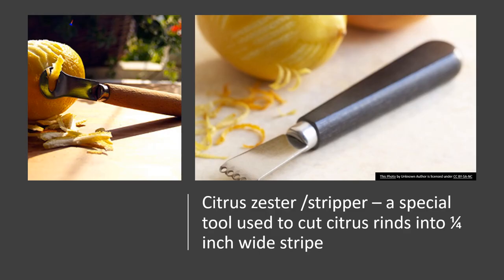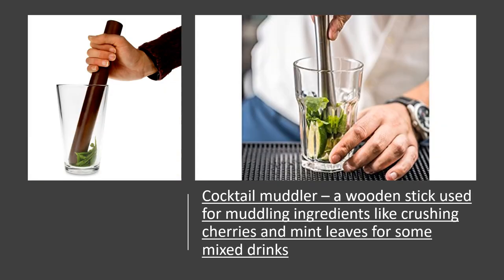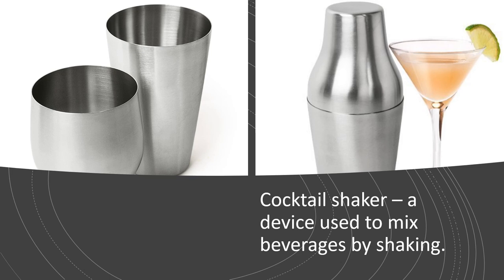A citrus zester or stripper is a special tool used to cut citrus rinds into one-fourth inch wide strips. In cooking we have a mortar and pestle; in bartending we have a cocktail muddler — it is a wooden stick used for muddling ingredients like crushing cherries and mint leaves for some mixed drinks. A cocktail shaker is a device used to mix beverages by shaking. Ice is normally added to make the drinks chill faster before serving.